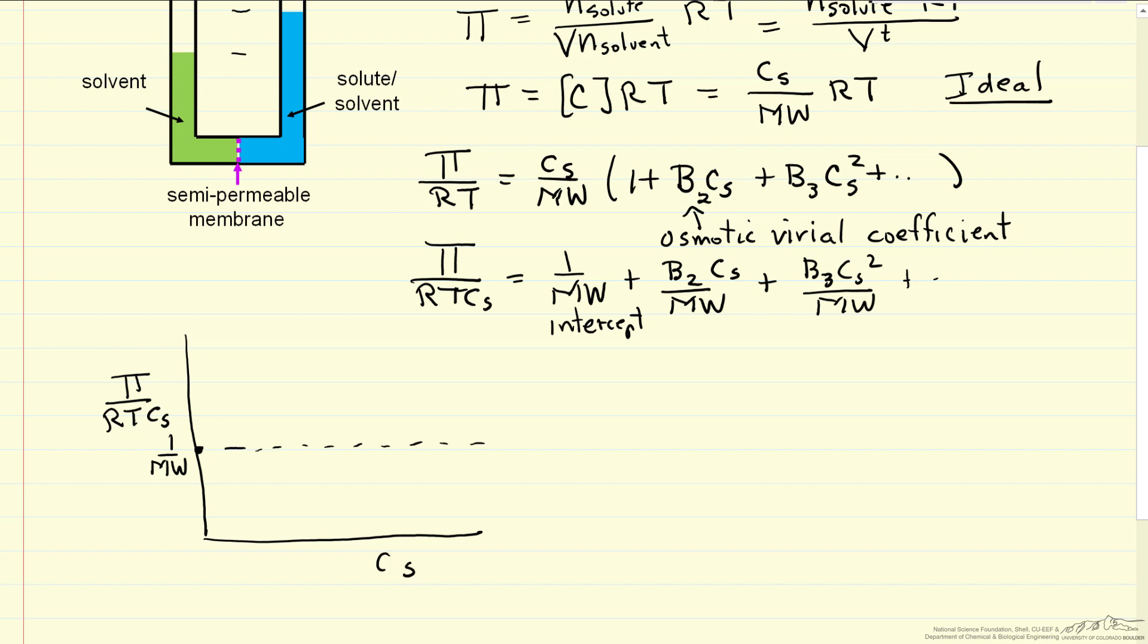If it's not ideal, and if perhaps only this term is important, B2, then we might have data that looks something like this, or perhaps like this. So if it's linear, we make this plot, we should be able to back out the molecular weight. But you can see, if it's linear, so this term's not important, the intercept gives the molecular weight, and the slope allows us to calculate this osmotic virial coefficient.